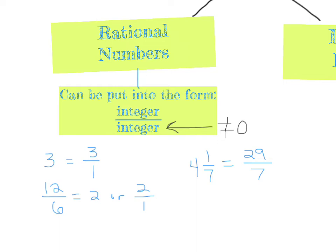One final example: 0.75. We can write this as 75 over 100 — right there you can see it is an integer over an integer. And if you reduce the fraction, it becomes three-fourths. So again, rational numbers.